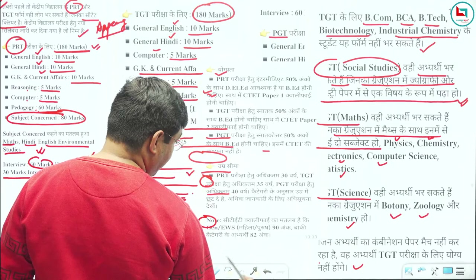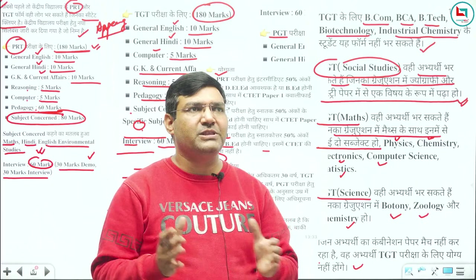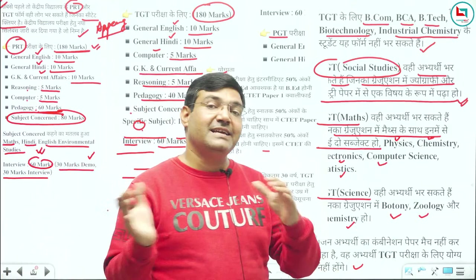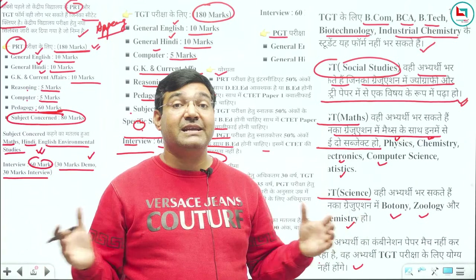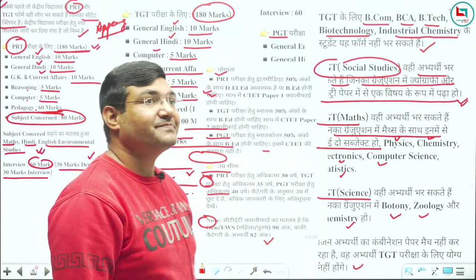For CTET qualifying: General/male-female candidates need 90 marks, other category candidates need 82 marks. Keep this in mind. UP exam will also keep happening, so keep that in mind. Whatever exam comes in front of us, be prepared. Fill the form and be ready for it — preparation should be maintained. For UP, you only need to study English additionally; for this you need CDP.